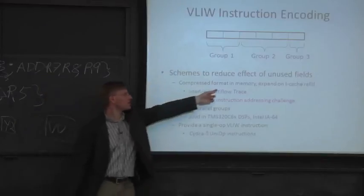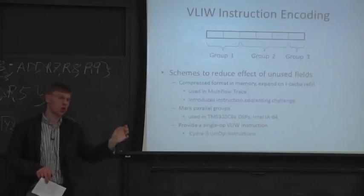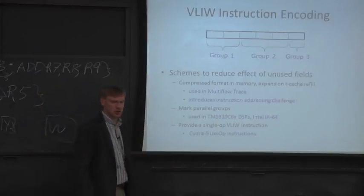Other things you can do is you can have compressed instruction formats. And then when you go to actually execute it, you uncompress the noops into your instruction memory, maybe. That's what Multiflow Trace Processor did. This marking parallel groups is what I was talking about before. Cydrome had an interesting solution to this. They actually had a single operation VLIW instruction. So to save space, they had their wide instructions. But if you had a case where you were only going to execute one operation in an instruction, there was a special encoding format just for that case. And that saved a lot of encoding space, or a lot of instruction space, if you will.